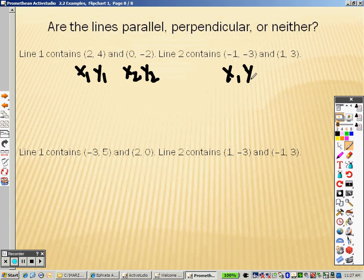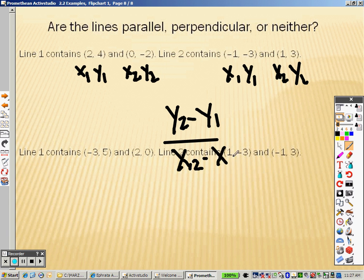That's x1, y1, x2, and y2. So according to the formula, again, it is y2 minus y1 over x2 minus x1.